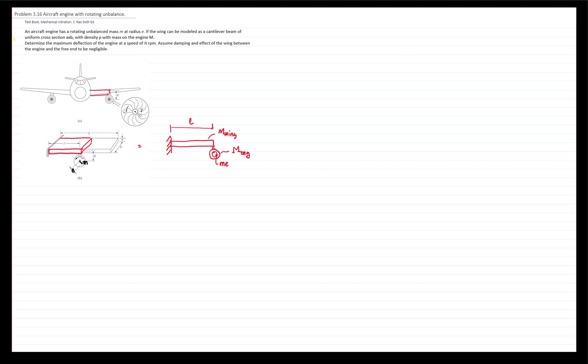We are being asked to determine the maximum deflection for an operating speed. The data given is the ME, the mass of the engine, the dimensions of the wing that will allow us to calculate the mass of the wing. This is a rotating machine, rotating speed N RPM, and we are being told that the damping is neglected.